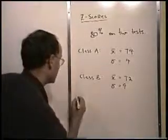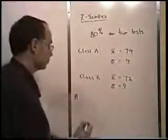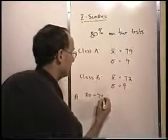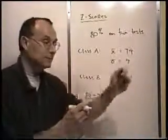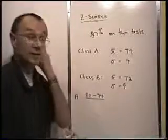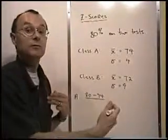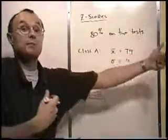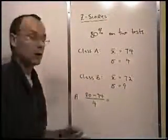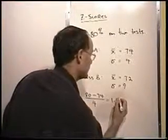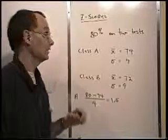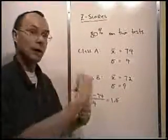Let me show you how we'd do that with class A. We take the 80% score and ask how far away is that from the class average — so we subtract 74. That's the distance from the mean; it's positive because we're above the mean. Then we ask how many standard deviations above average is that? So we divide by the deviation of 4. That gives us 1.5 — meaning one and a half deviations above average, which is quite a bit better than average.